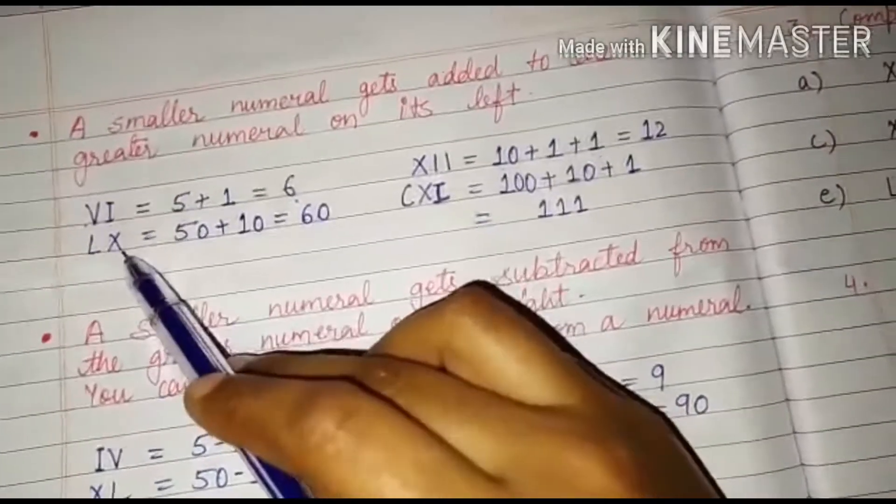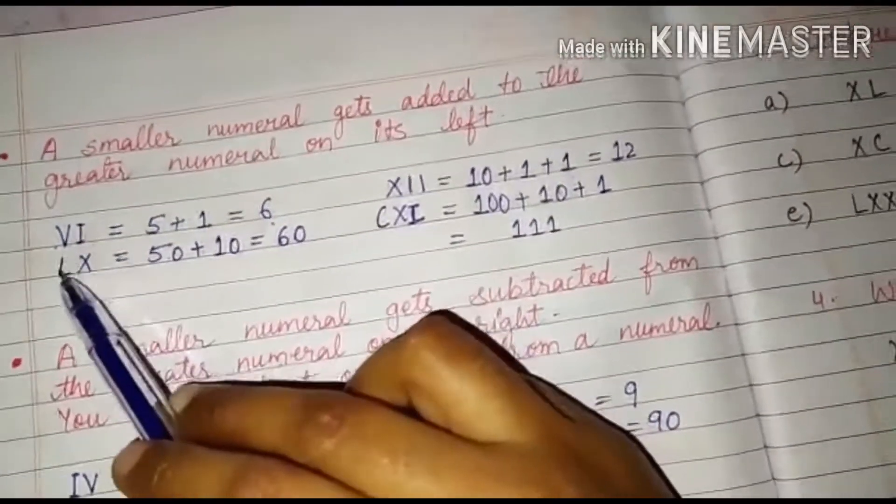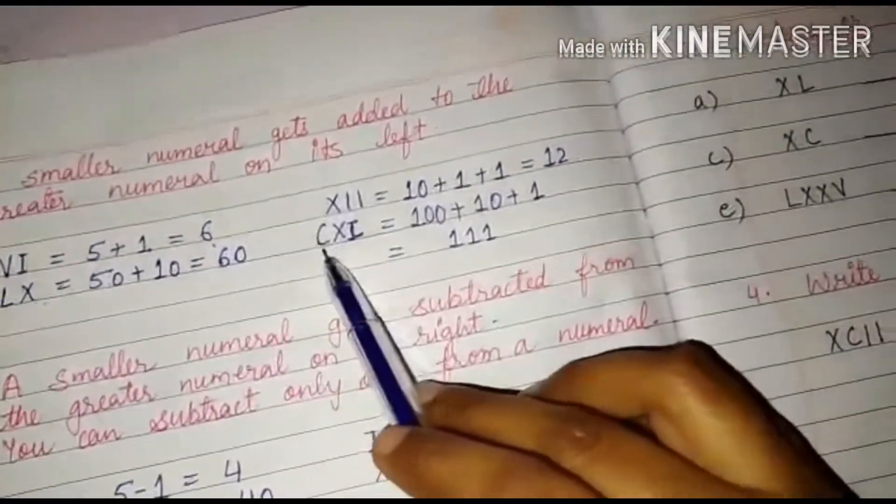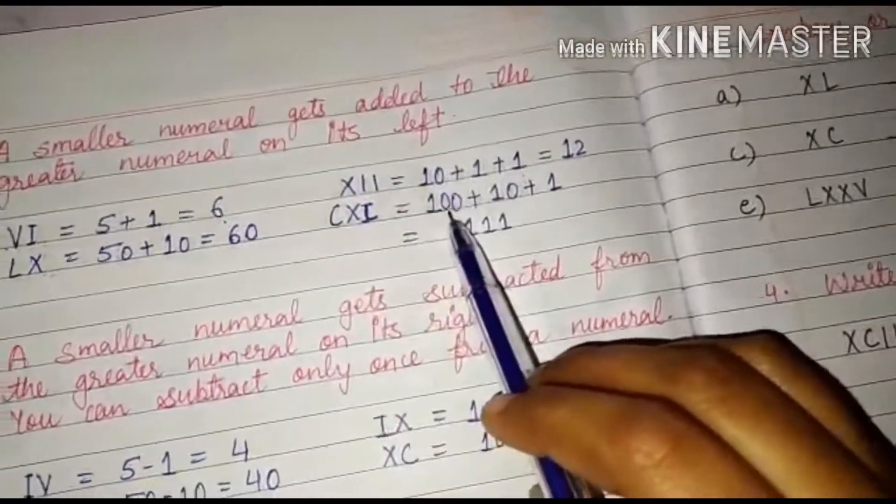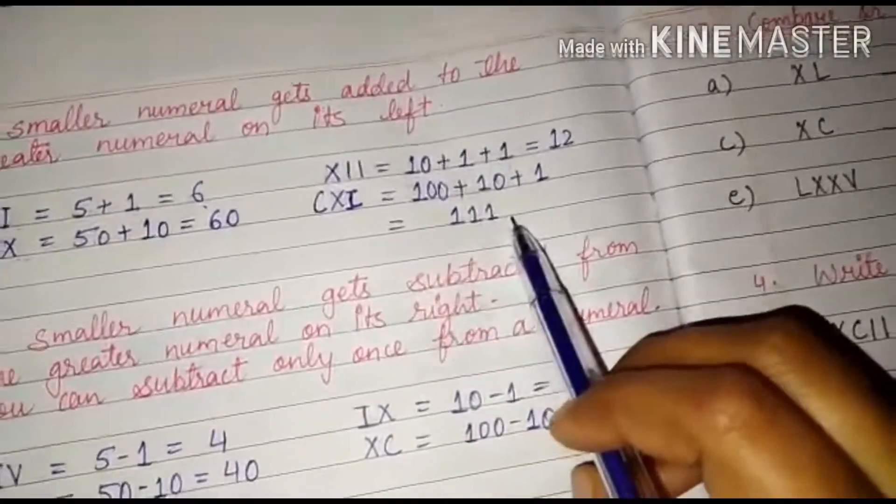LX, L is 50, X is 10. So I am adding them because X is to the left of the greater number L. So I will get 60 here. CXI. So C is 100, X is 10 and I is 1. So we will get 111 for it.